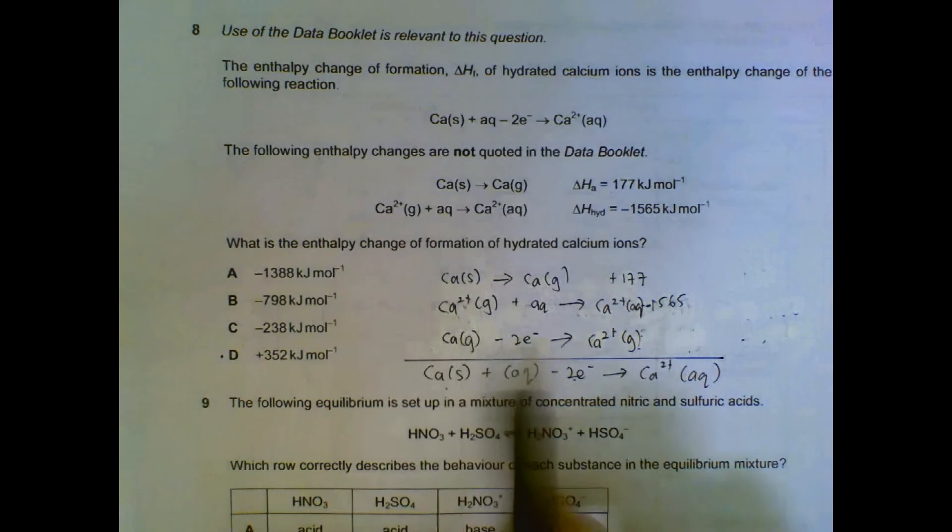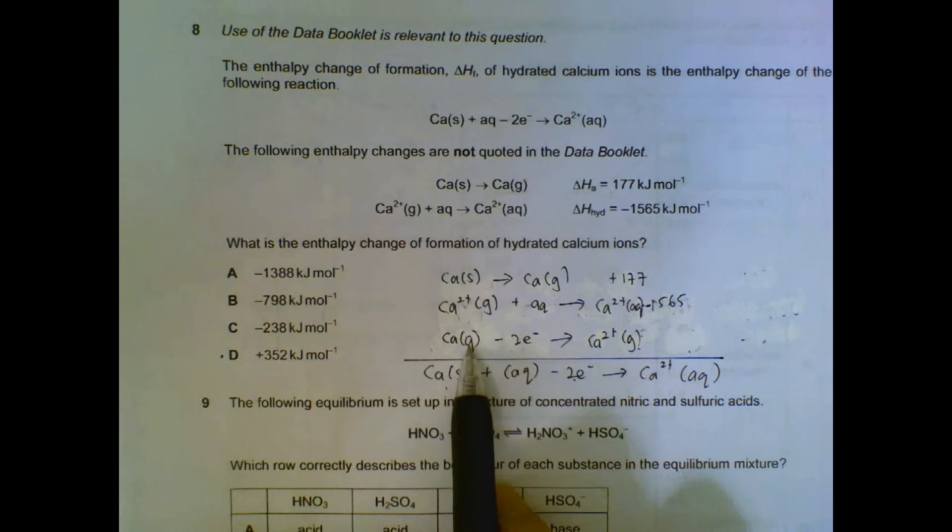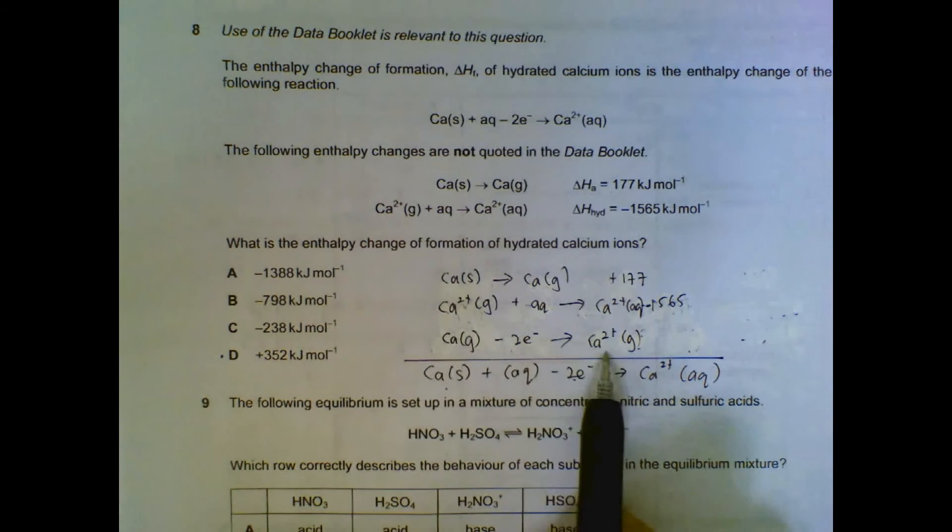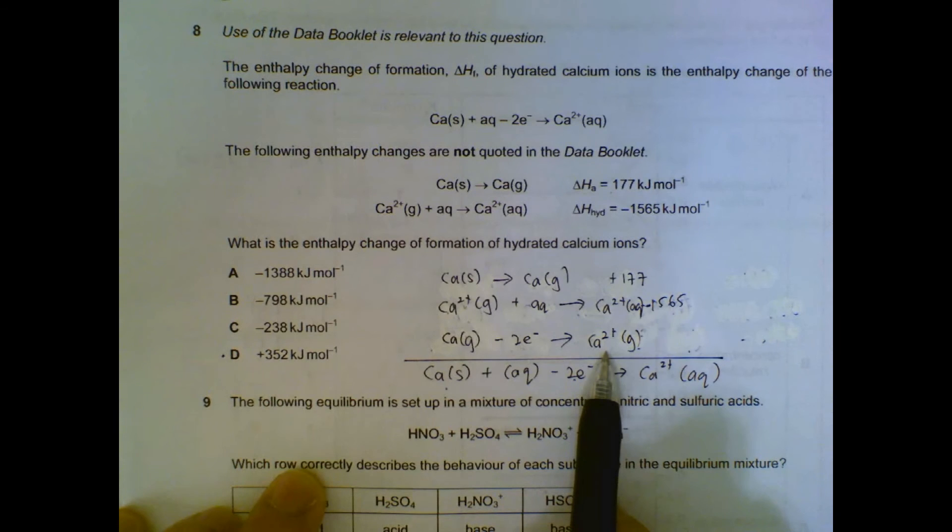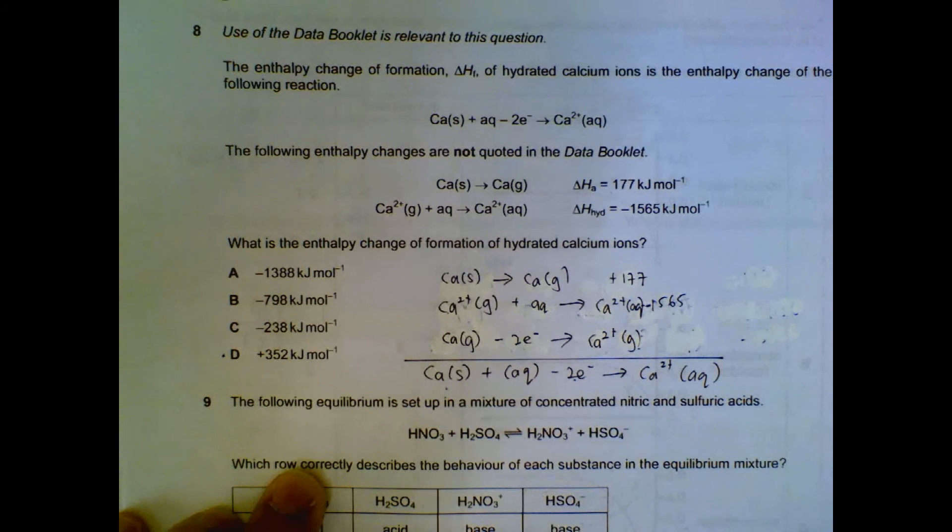What is this actually? Calcium gas losing two electrons forming calcium 2+ ions, they are gases. This is the first ionization energy plus second ionization energy of calcium that is found in the data booklet.